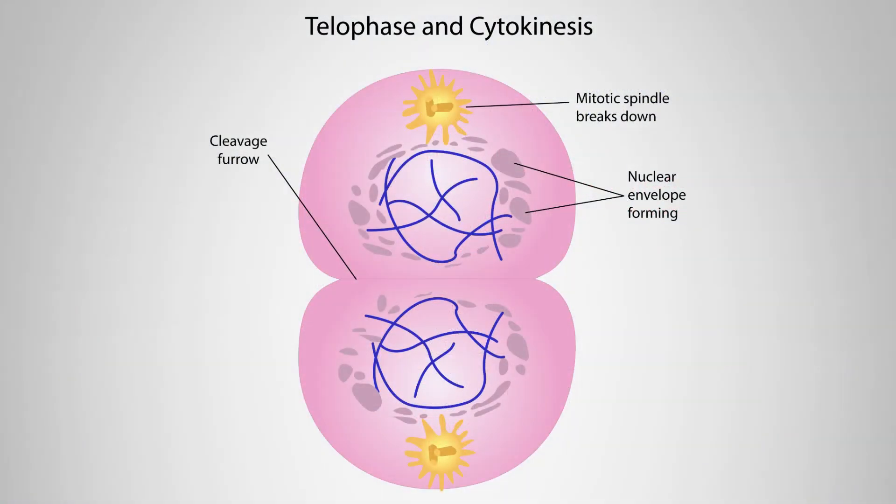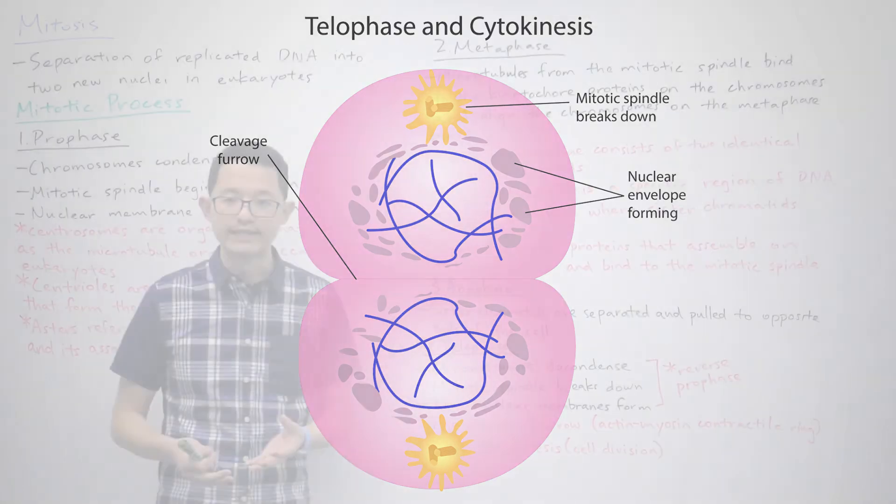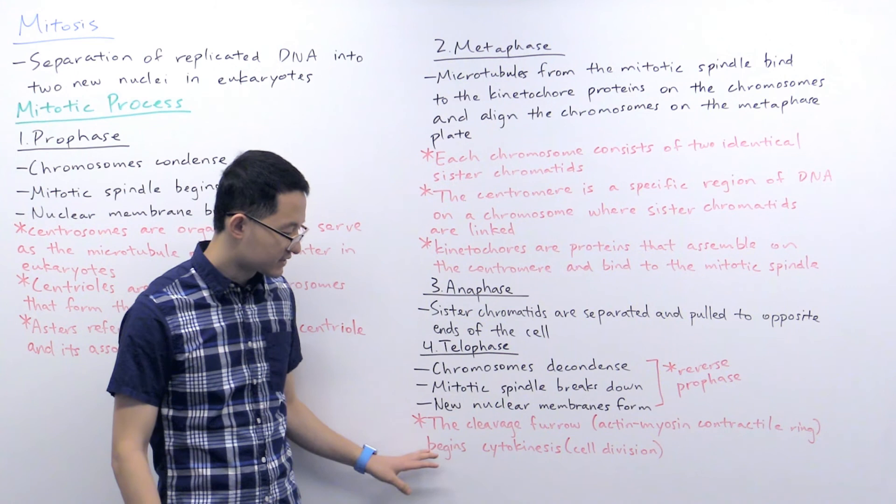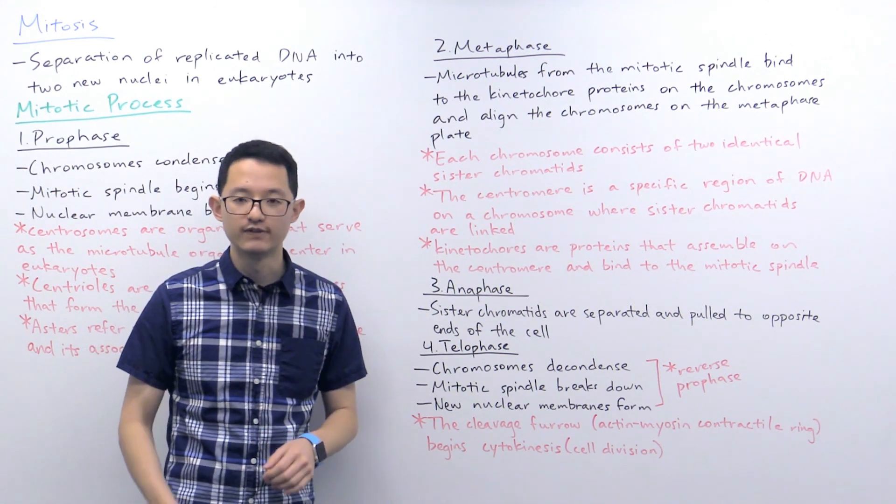Now, in addition, when you look at this diagram of telophase, you can see the presence of a cleavage furrow. The cleavage furrow is formed from a contractile actin-myosin ring, and this is essentially initiating the process of cytokinesis, cell division.